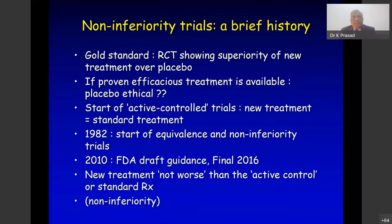If bias is controlled and the trial is conducted properly, it gives you a clear answer — the drug is superior to placebo. The problem is, if there is a proven efficacious treatment, people question that you can't do placebo-controlled trials — it is not ethical — and therefore they started what is called active control trials. Placebo is inactive, but use something in its place which is active.